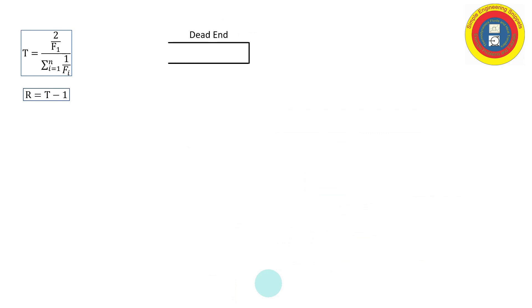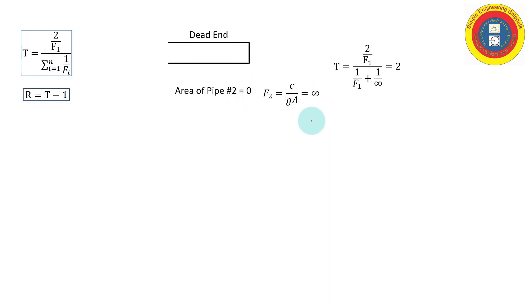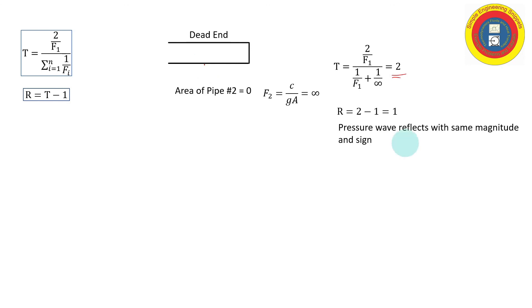Let's look at special cases. For a dead end, nothing is transmitted past it. Setting the area of pipe two to zero makes its elastic factor infinity. The transmission factor becomes T equals two over F1 divided by one over F1, which equals two. Therefore the reflection factor R equals one: an incoming wave reflects off a dead end with the same magnitude and same sign.